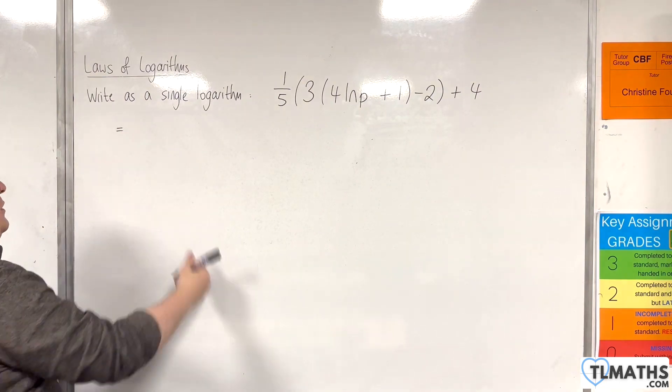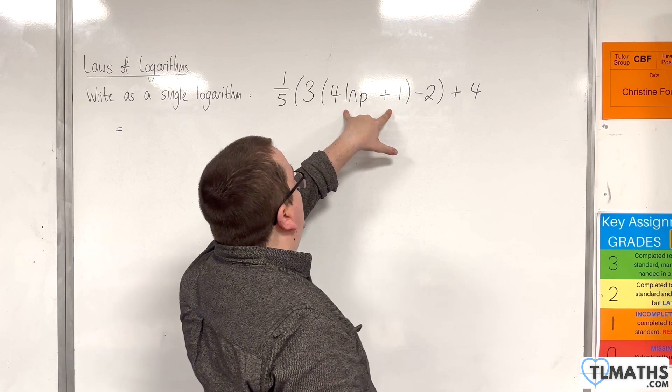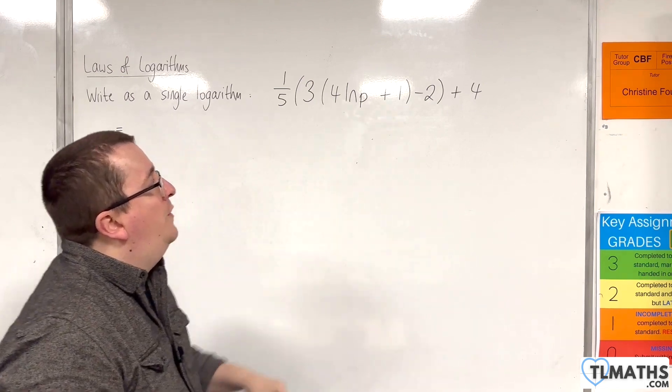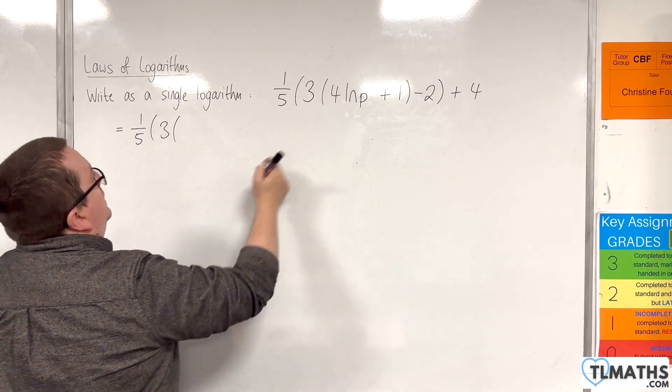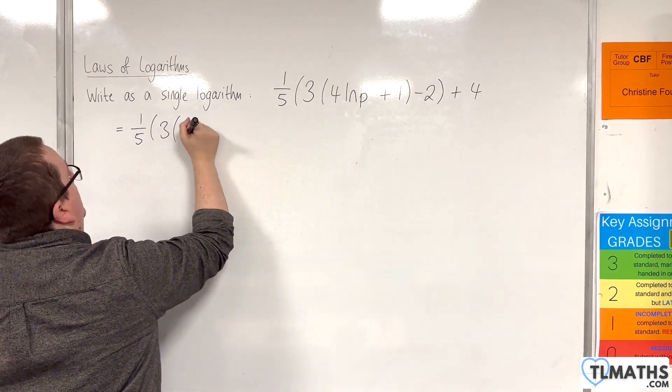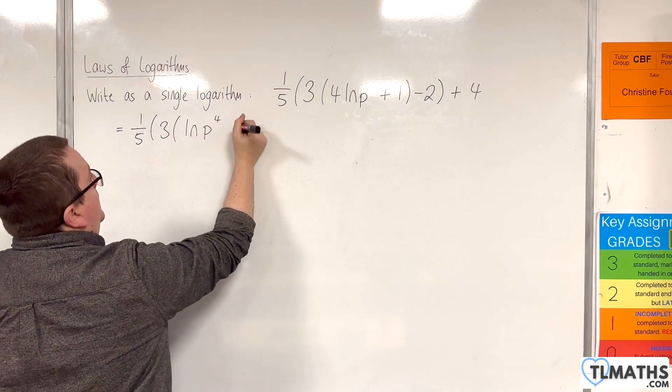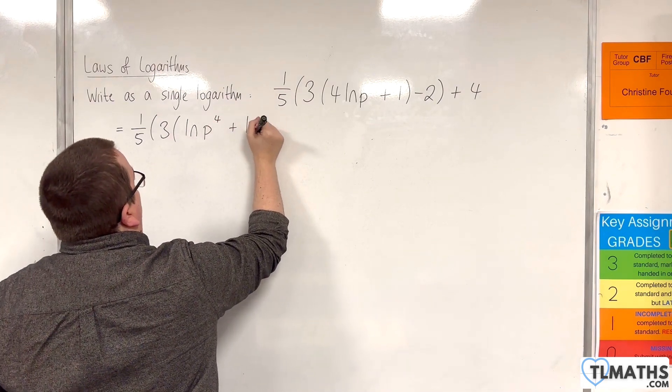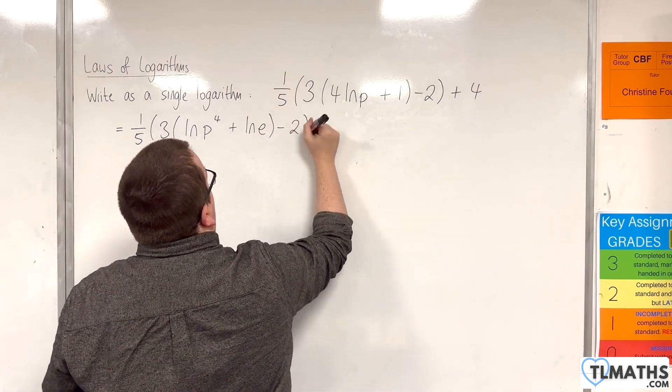So what I'm going to do is start off by looking at the middle bracket, the 4 natural log of p plus 1, and simplify that. So I'll keep the 1/5 and the 3. Bring the 4 up to the power, so log p to the 4, and the 1 I'll write as the natural log of e. Then we've got take away 2 and then plus 4.